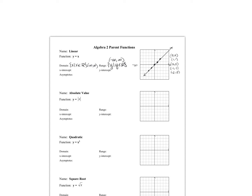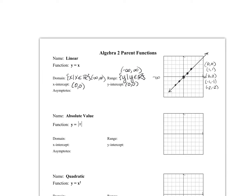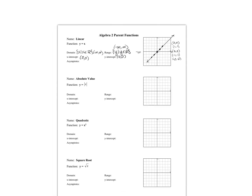Now, intercepts — remember, intercepts are points, coordinate pairs, x-y coordinates. Our intercept is the center point, so the x-intercept is (0, 0) and the y-intercept is (0, 0). An asymptote is a line that the graph will approach but never crosses — the one we'd graph as a dotted line. But this graph does not have any asymptotes, so we write none. That's your review of the linear function.